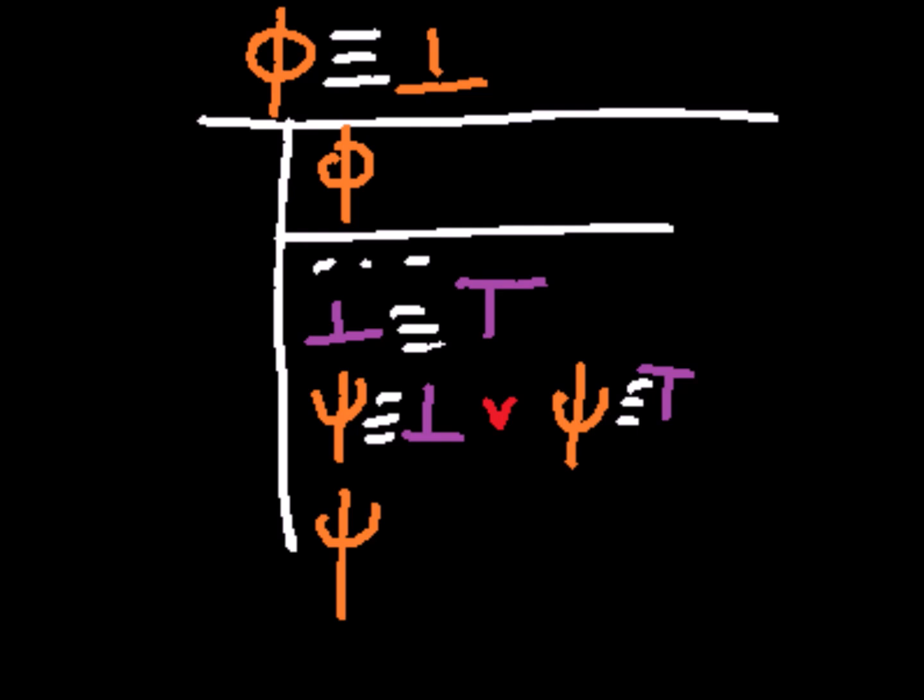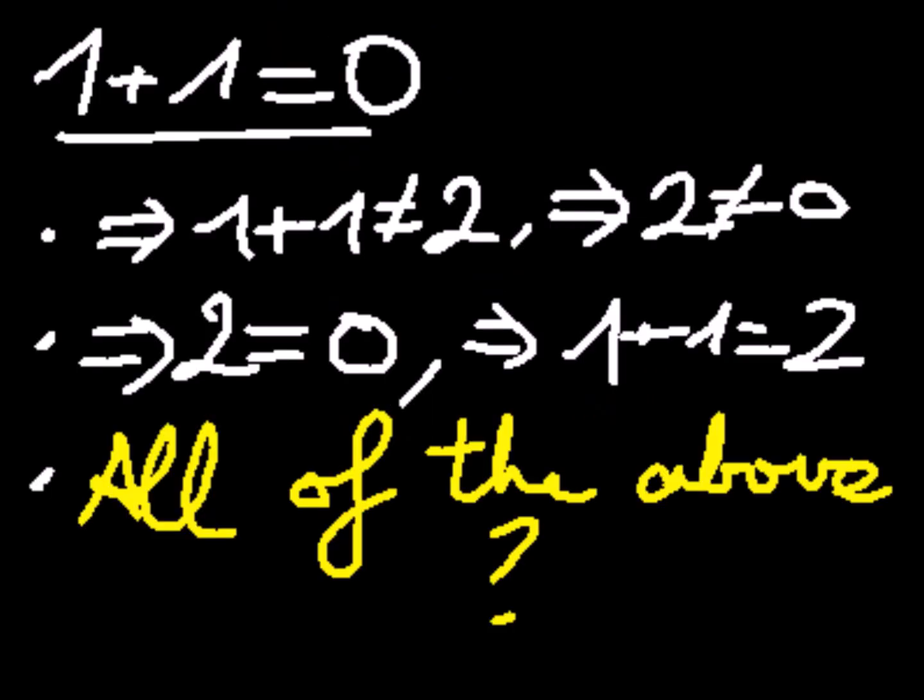Since phi is an arbitrary negatable proposition, and psi is an arbitrary proposition, period, this proves what I was arguing earlier, when I said all of the above could be a valid response to the 1 plus 1 equals 0 problem.